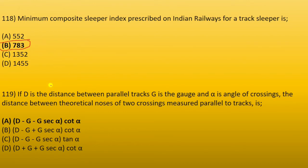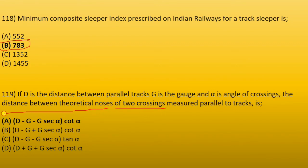Next: if D is the distance between parallel tracks, G is the gauge, and alpha is the angle of crossing, the distance between the vertical noses of two crossings measured parallel to the tracks is: D minus G minus G·sec(alpha) divided by cot(alpha). That is the formula.